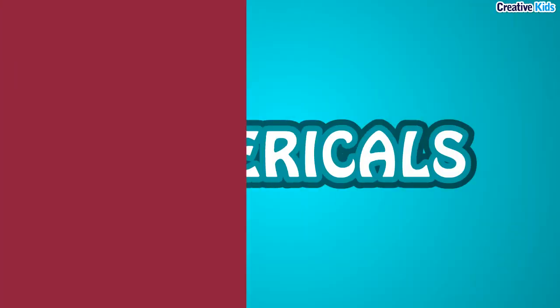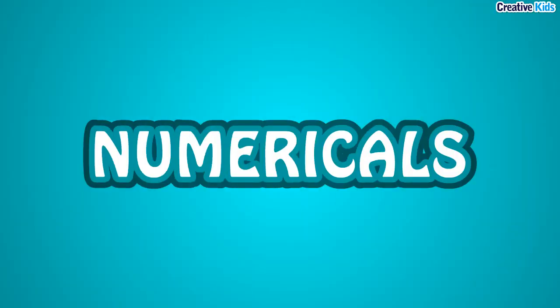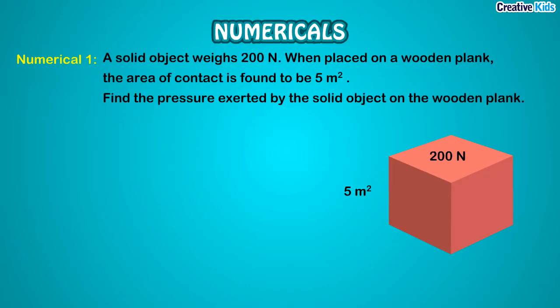Let us do some numericals based on the concept of pressure. Numerical 1: A solid object weighs 200 N. When placed on a wooden plank, the area of contact is found to be 5 m². Find the pressure exerted by the solid object on the wooden plank.